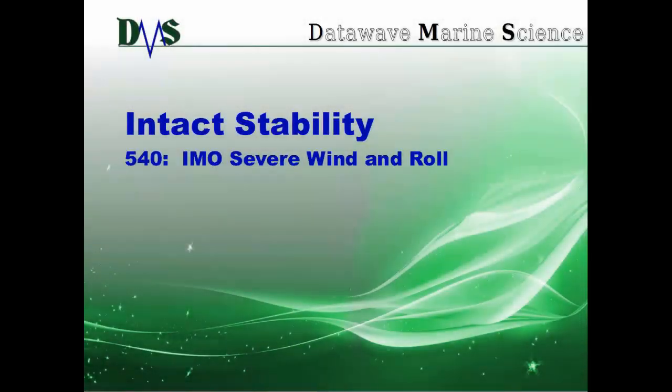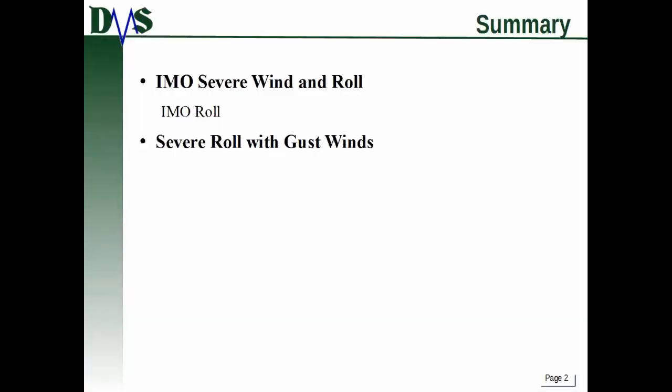Welcome to this tutorial on intact stability. Tutorial number 520 focuses on IMO Severe Wind & Roll Criteria. The IMO Severe Wind & Roll Criteria is a special criteria written by the IMO. The reason it's special doesn't have to do with the criteria itself — it has to do with getting it actually coded right in the computer, which is kind of tricky. GHS has a special way to do this and we're going to cover that.